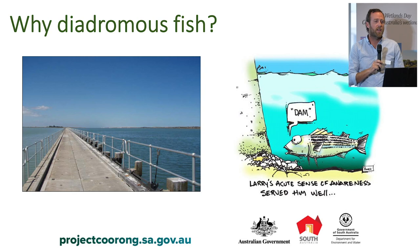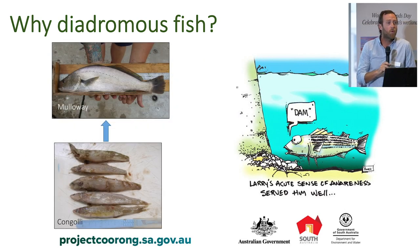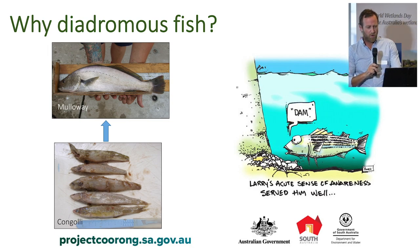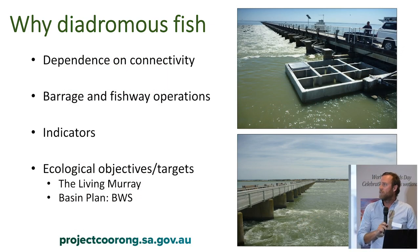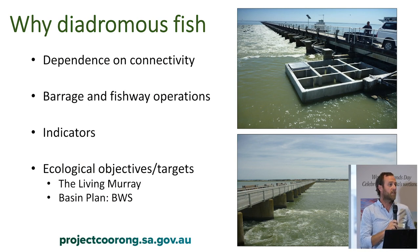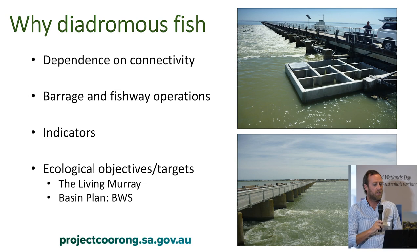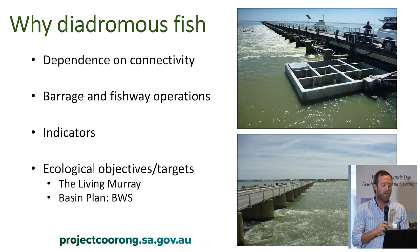All species native to the basin have seen declines since regulation of the river. They're also important for food web dynamics - congoli being quite abundant is a really important prey item for a range of larger piscivorous fishes and birds, so they're important in transferring energy between trophic levels. Because of their migratory life histories they're really dependent on connectivity between freshwater and marine environments, and their population dynamics are heavily influenced by barrage operation. They represent excellent indicators of management actions seeking to promote connectivity and flow, and they've had specific ecological objectives and targets under the Living Murray program since about 2006-7, as well as specific objectives in the Basin-wide Watering Strategy.